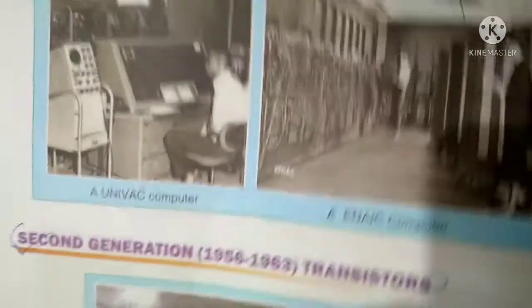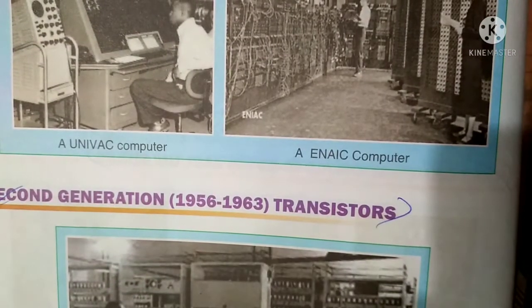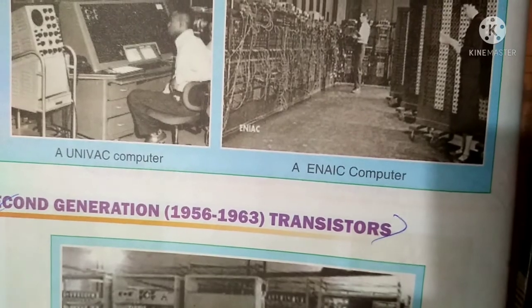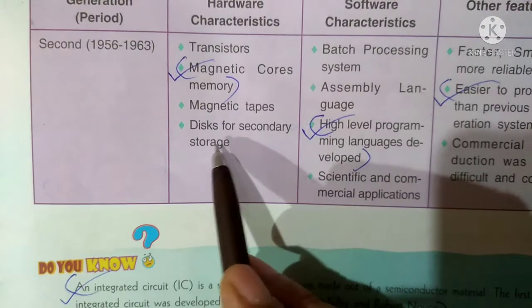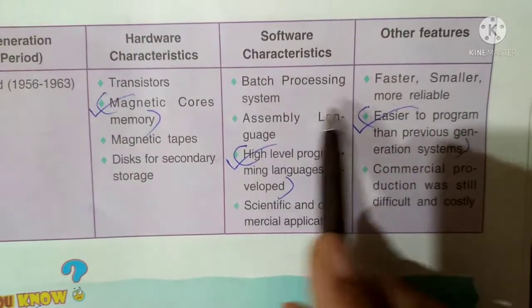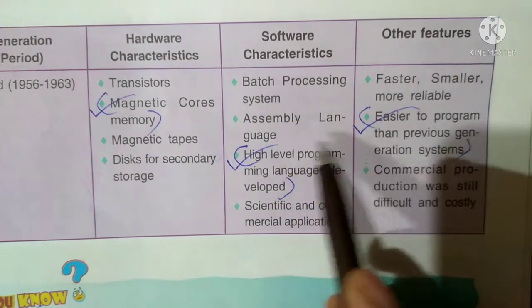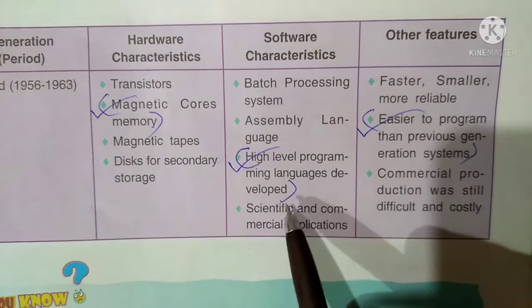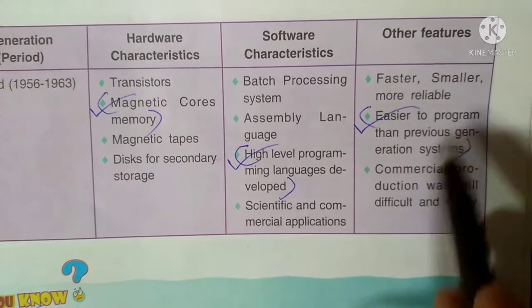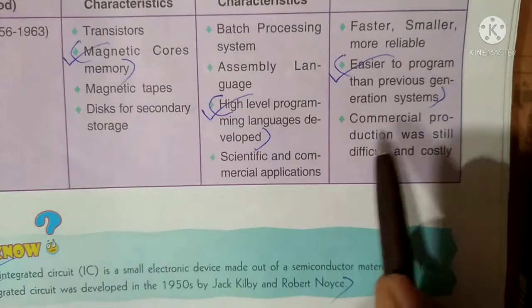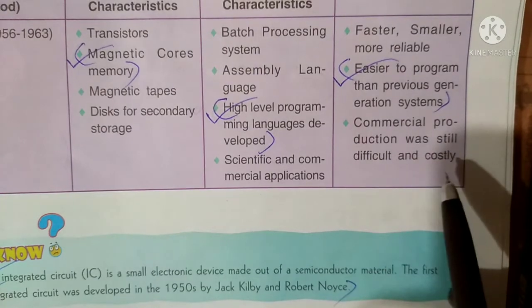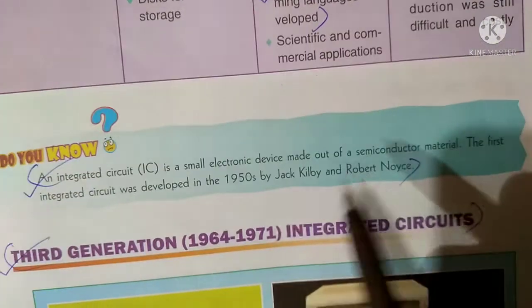Second Generation computers were mainly made up of transistors. Hardware characteristics: transistors, magnetic cores for memory, magnetic tape and disc for secondary storage, and batch processing system. Software characteristics: assembly language and high-level programming languages were developed. Applications were both scientific and commercial. Computers became faster, smaller, more reliable, and easier to program, though commercial production was still difficult and costly.